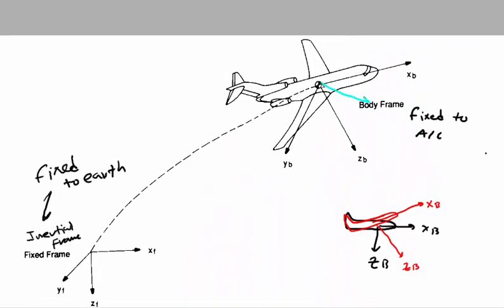For example, if we have a velocity vector V-body, this velocity vector has components along x-body, y-body, and z-body. The component of V-body along x-body is called u, along z-body is called w, and along y-body is called small v.